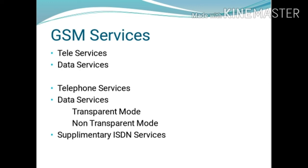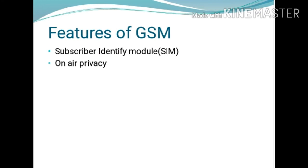The two important features of GSM are the Subscriber Identity Module and on-air privacy. The Subscriber Identity Module, or SIM, is a memory device which stores user-related information such as the subscriber identification number, the network and countries where services can be provided to the subscriber, the privacy key, and other important functions.